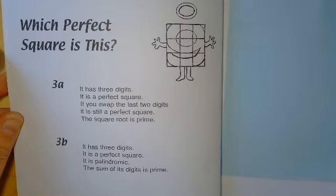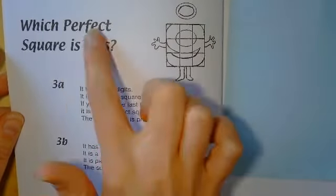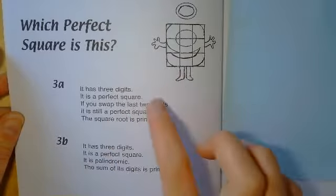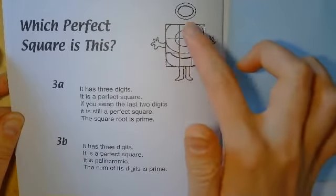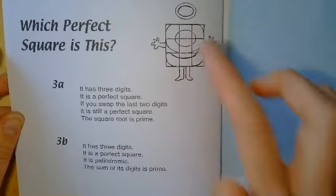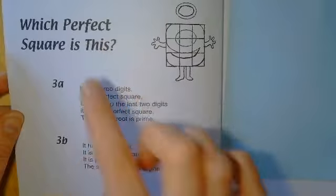Which perfect square is this? Perfect square is another way of saying a square number. For example, nine here. Nine squares, when put together, make a square. So perfect square just means square number.